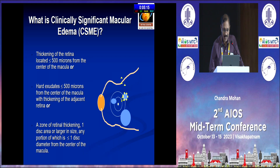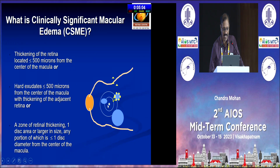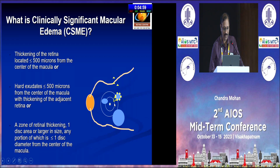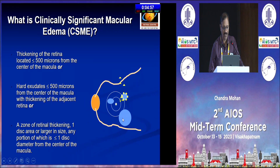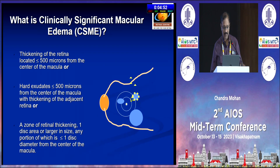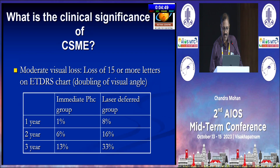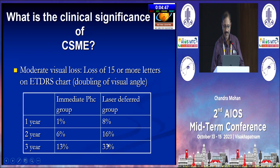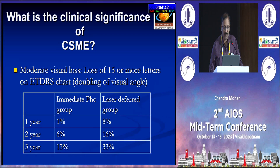I included this slide because during the era of focal laser, we used to think carefully about what is clinically significant macular edema — CSME. The definition included: area of thickening within 500 microns of the center of the fovea; area of hard exudates with adjoining retinal thickening falling within 500 microns from the center; and area of one disc diameter falling within one disc diameter. We used to categorize this because focal laser prevented two-line visual acuity loss in these patients for a period of three years.